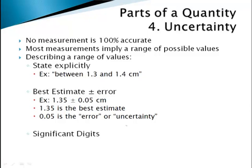A different way that you can express a measurement — pretty popular in the engineering field — is to give a best estimate, your best guess at what it is, and then also provide what's called an error, an uncertainty, or a plus-or-minus value on either side — some wiggle room. So that same measurement of 1.3 to 1.4 centimeters might be best described as 1.35 ± 0.05 centimeters, meaning you're willing to go five hundredths of a centimeter above or below that guess.